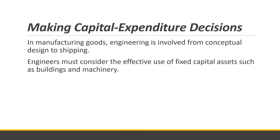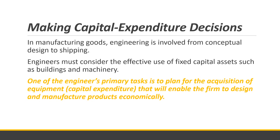In manufacturing goods, engineering is involved from conceptual design to shipping, especially for machines, motors, engines, or chemical-related substances. Engineers must consider the effective use of fixed capital assets such as buildings and machinery. One of the engineer's primary tasks is to plan for the acquisition of equipment — the capital expenditure — that will enable the firm to design and manufacture products economically.